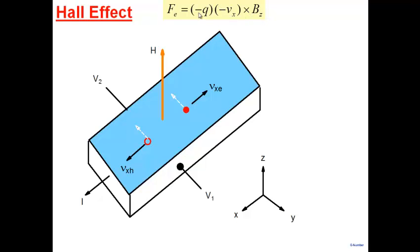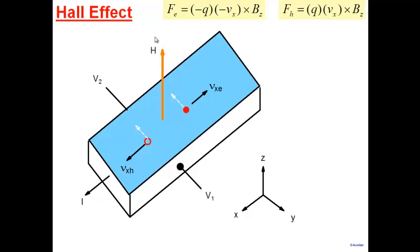The force on the electron is: charge (−q) × (−v_x) × B_z. The minus signs cancel and the force acts in the negative y-direction. The same argument shows the force on the hole — which carries positive charge with v_x positive — also acts in the same direction. This Lorentz force pushes both electrons and holes toward the same side.